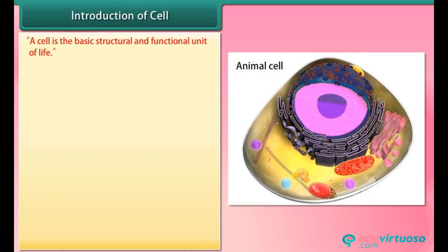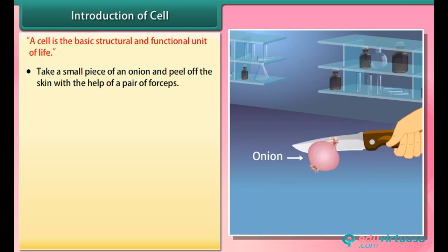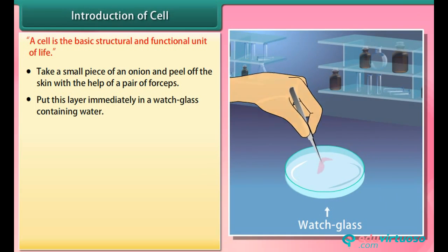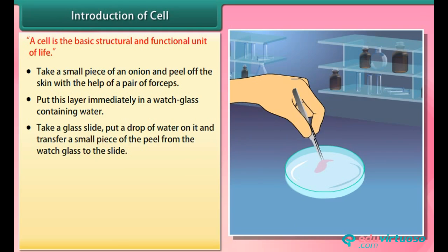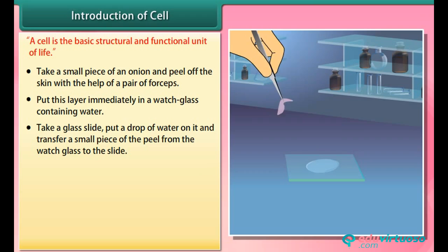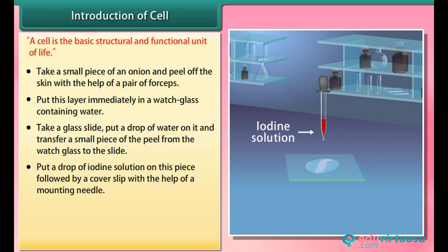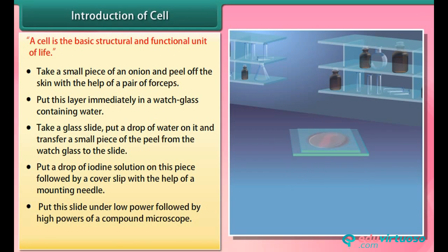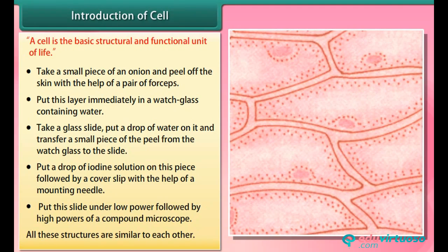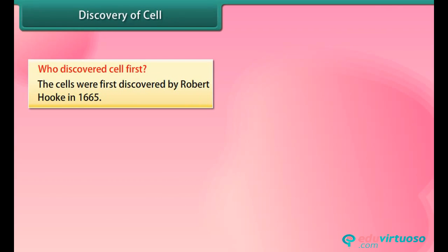A cell is the basic structural and functional unit of life. In an experiment, take a small piece of an onion and peel off the skin with a pair of forceps. Put this layer in a watch glass containing water. Take a glass slide, put a drop of water on it, transfer a small piece of the peel, add a drop of iodine solution, place a cover slip, and observe under low and then high power of a compound microscope. All these structures are similar to each other.